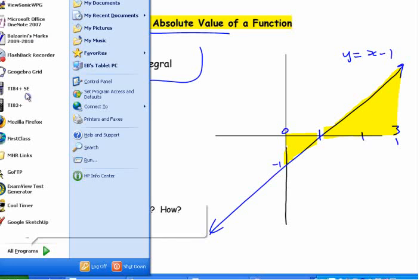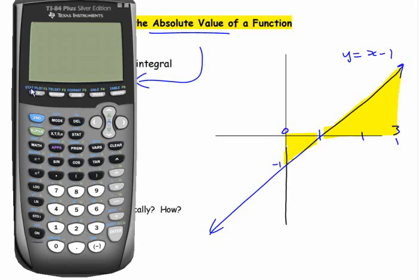We can do it on the calculator. You can graph x minus 1. We'll go zoom decimal. So that's x minus 1, that's what it's trying to draw over there. If you want the area underneath there, we can get it to do this calc thing here. This does it on either calculator. Lower limit is 0, upper limit is 3.